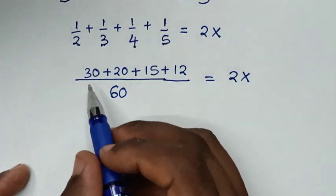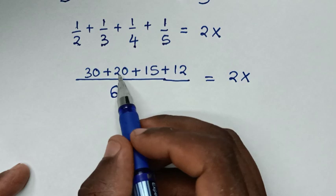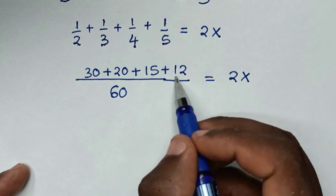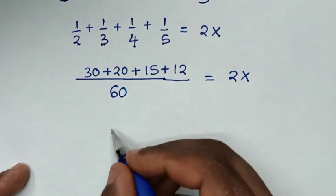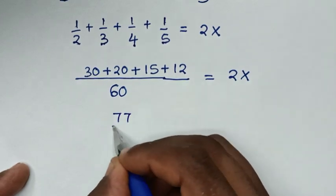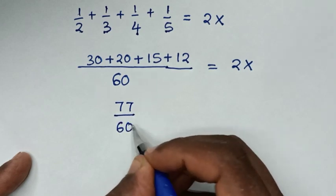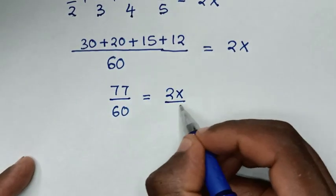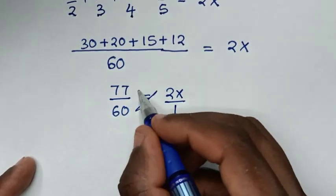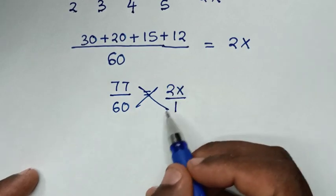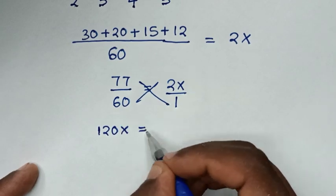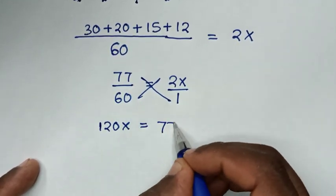Adding these up: 30 plus 20 is 50, plus 15 is 65, plus 12 is 77. So it will be 77 over 60, equals 2x. Since 2x is the same as 2x over 1, we cross-multiply: 2x times 60 is 120x, equals 77 times 1, which is 77.